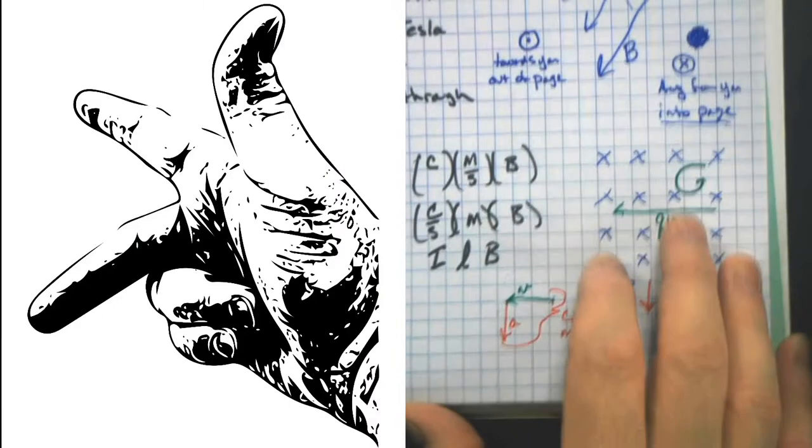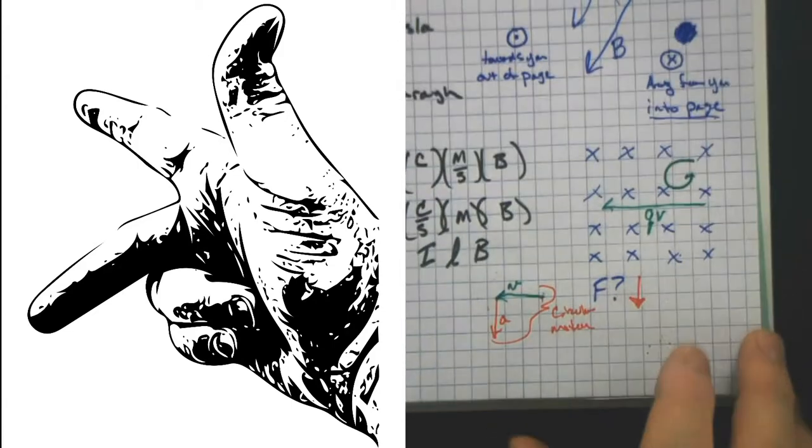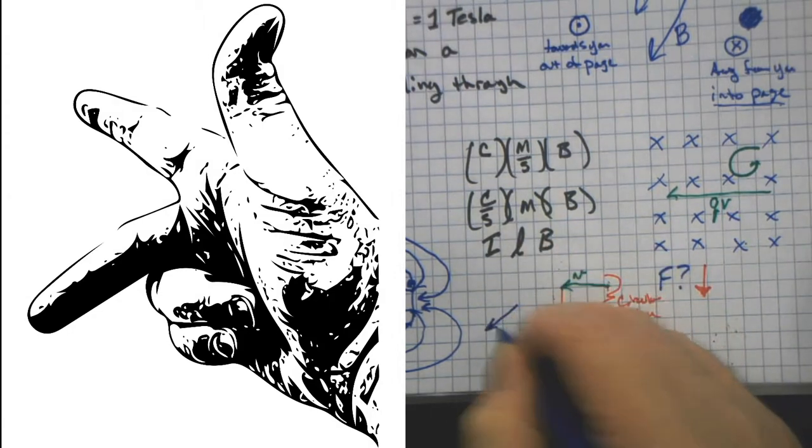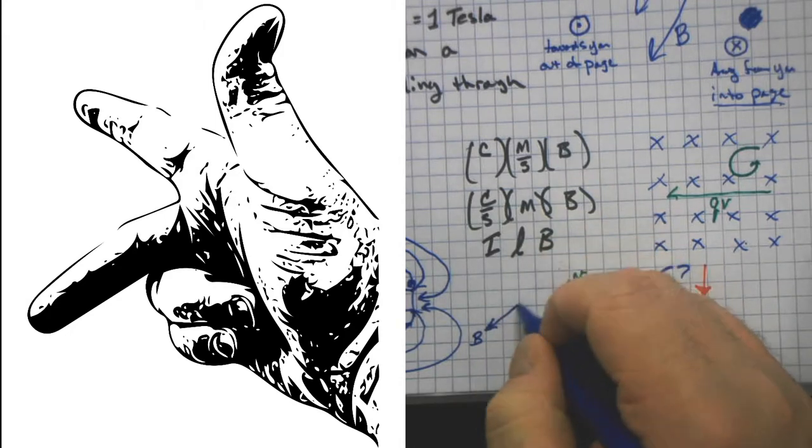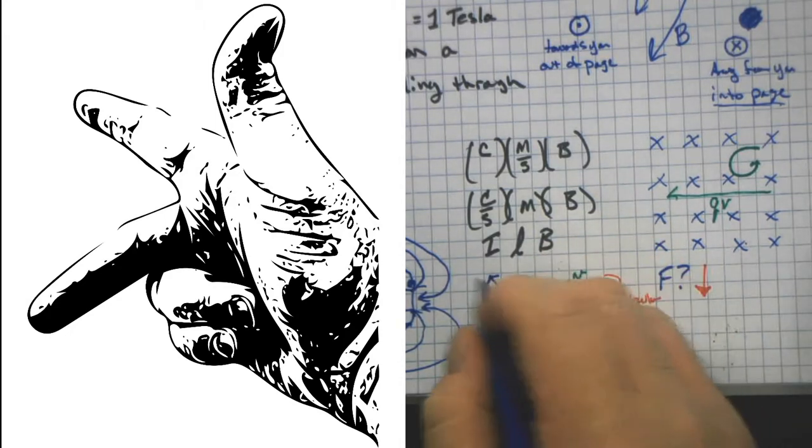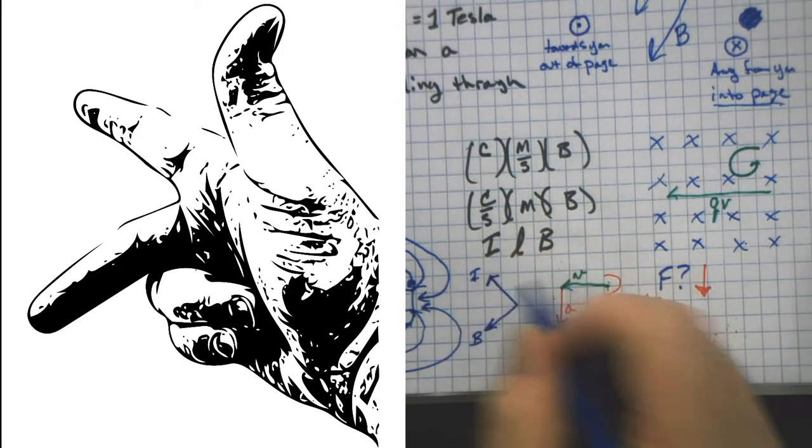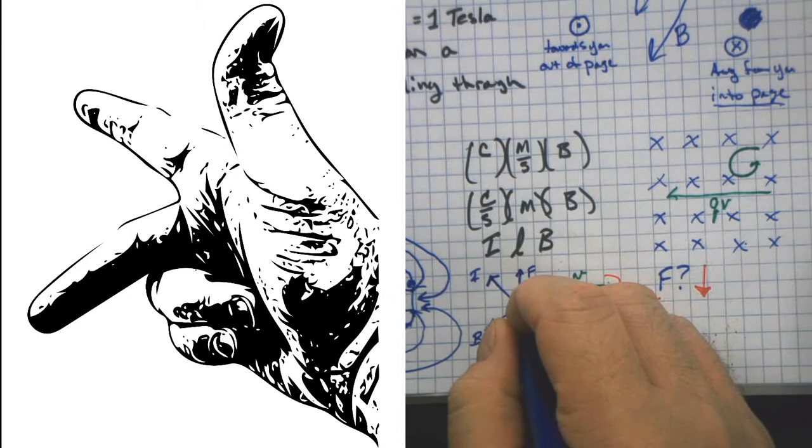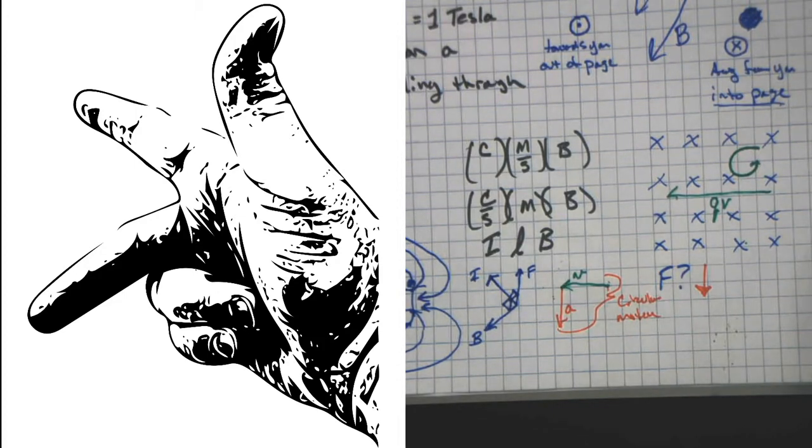So here is my right hand rule. And yes, this is actually my right hand. And yes, we're recording right now. But the idea is that we have this one going that way is the field. We have that one is the current or the direction of the charge. And then this one is the force. And that's right angle, right angle, right angle. And they're all at right angles to each other. So that's how that works. So the thumb is force. Index finger, I is for index. Middle finger is your field. And F is your force.